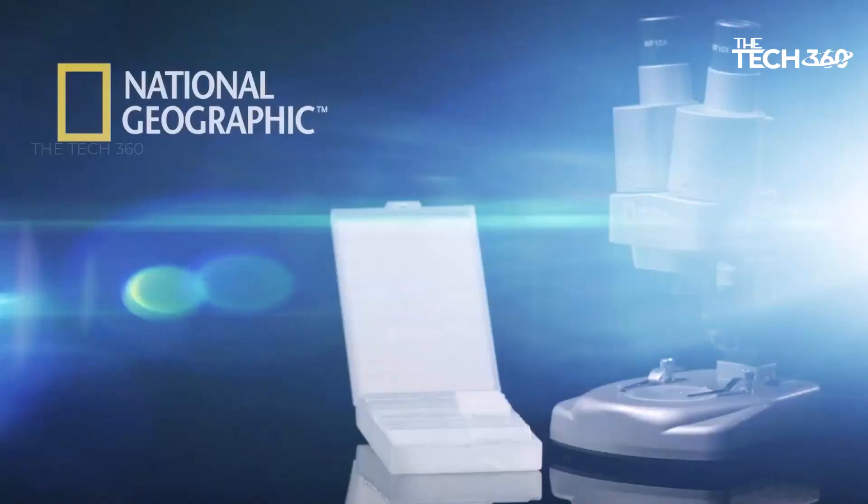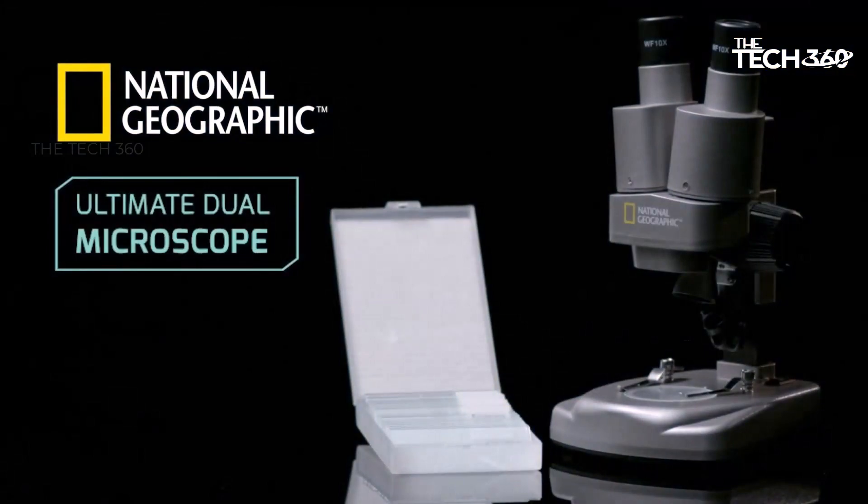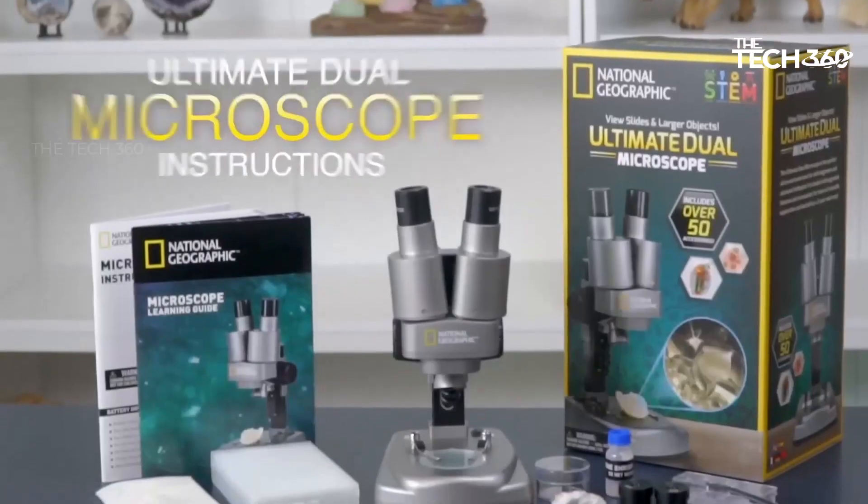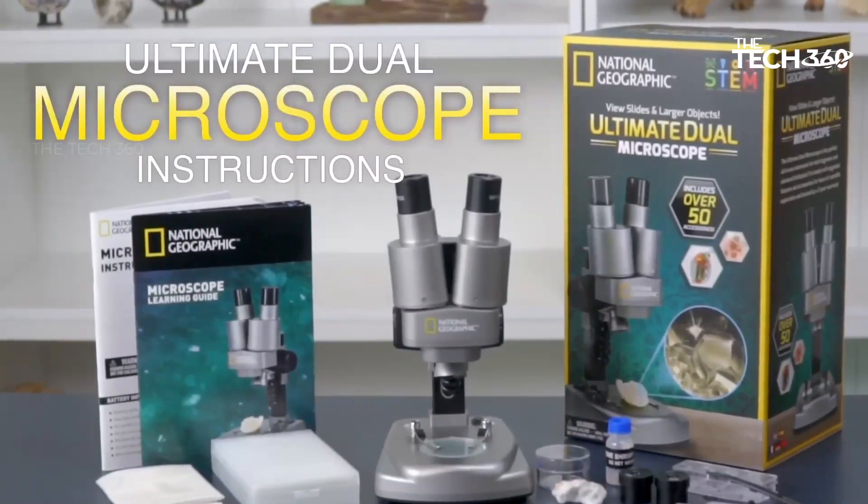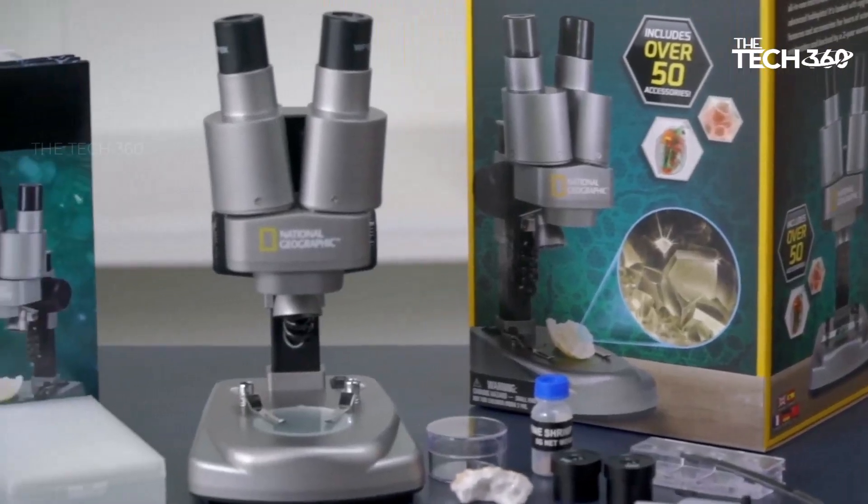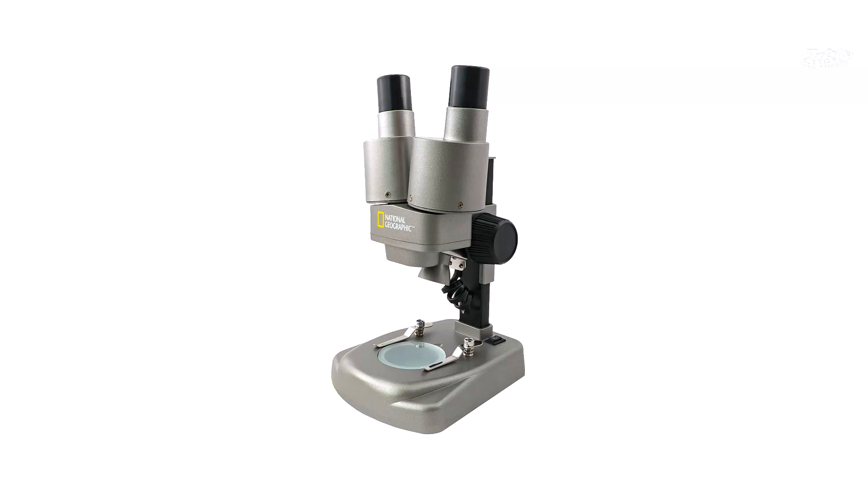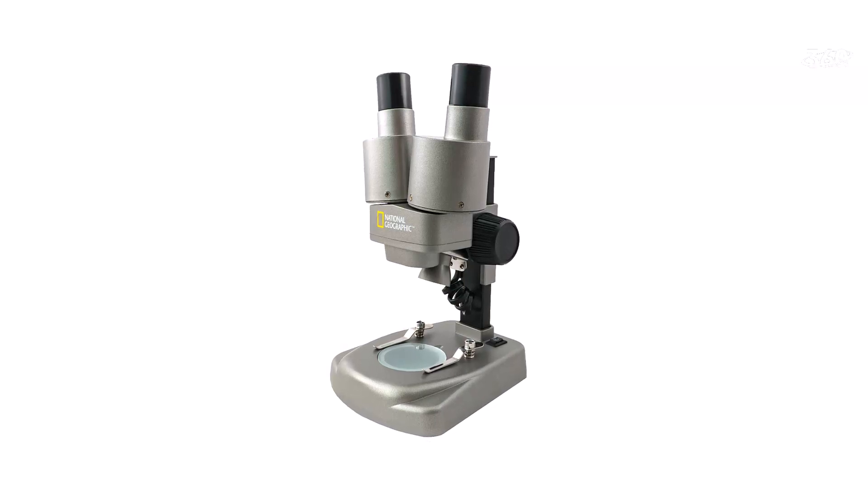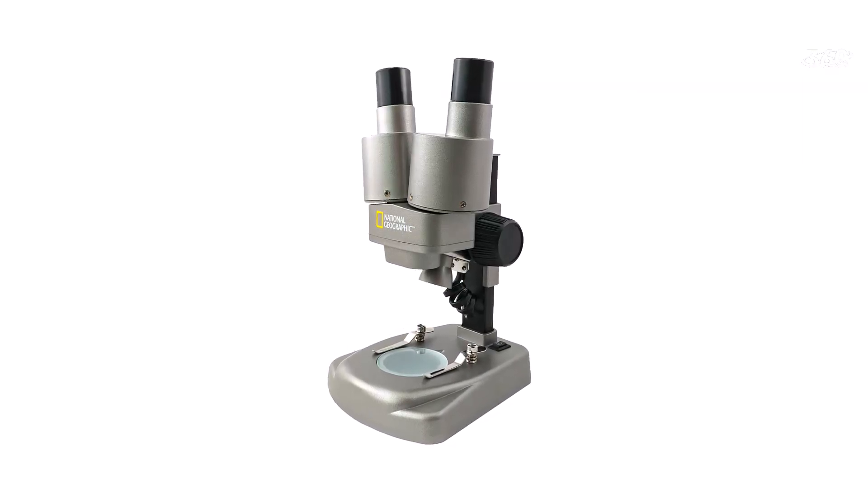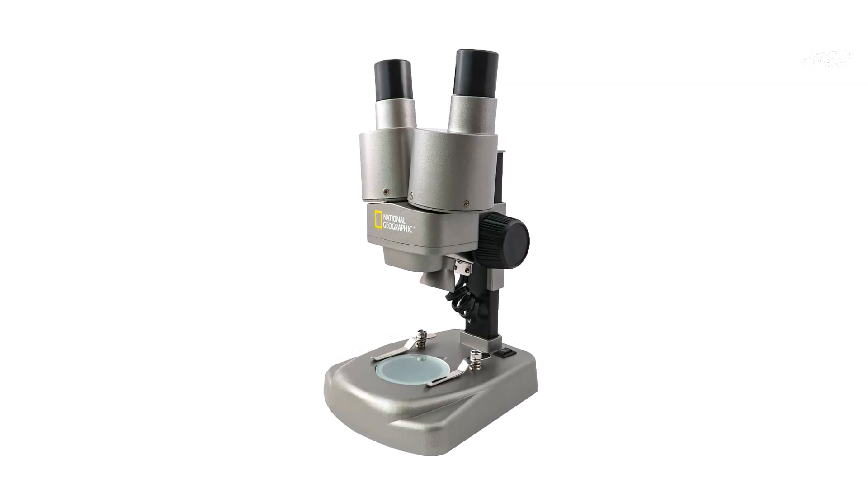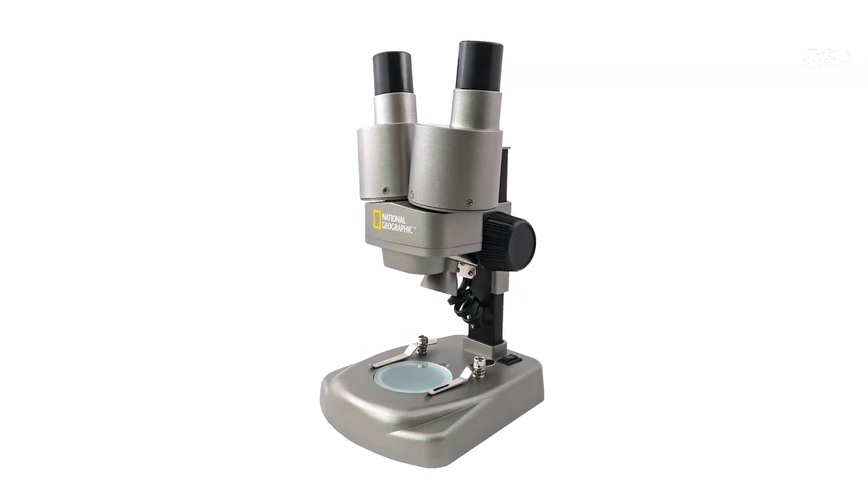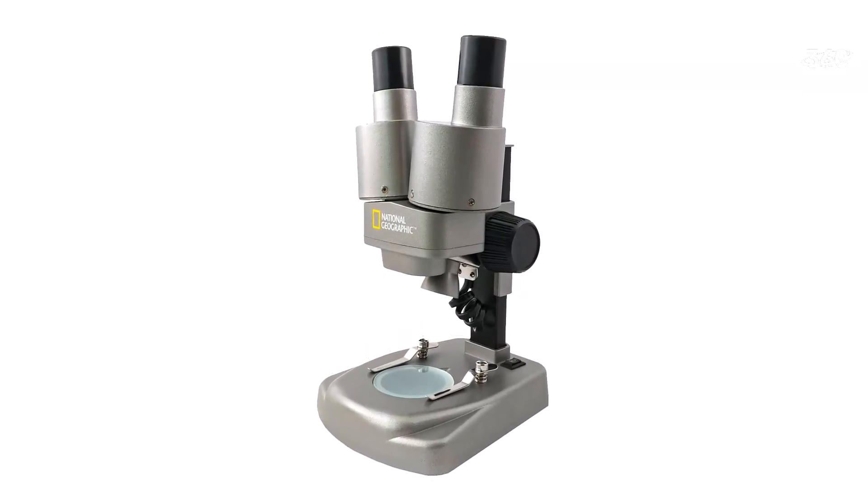The National Geographic Dual LED Microscope provides the convenience of two microscopes in a single device. Use the lower LED lights to view biological specimens on slides, and effortlessly switch over to the upper lights for examining 3D objects in intricate detail. This dual functionality adds versatility to the microscope.